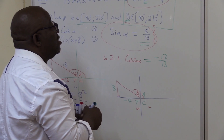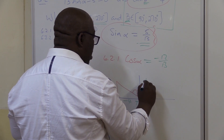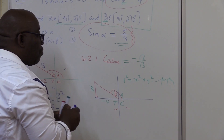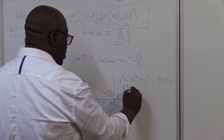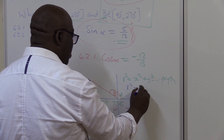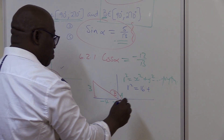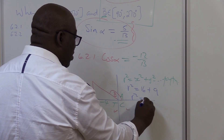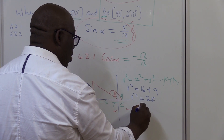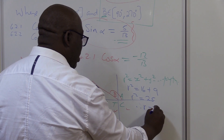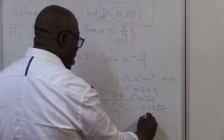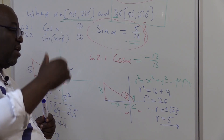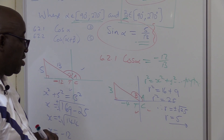We know that R squared equals x squared plus y squared — this is Pythagoras. R squared equals minus 4 squared plus 3 squared, which is 16 plus 9, equals 25. Therefore R equals plus or minus square root of 25. R equals 5. You make it positive because R is a distance — radius is a distance from the center of a circle to the circumference, so R will always be positive. We now have R.